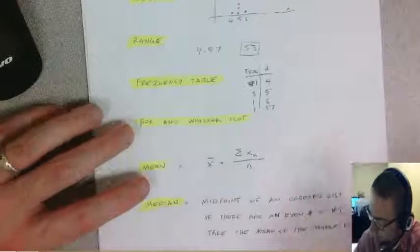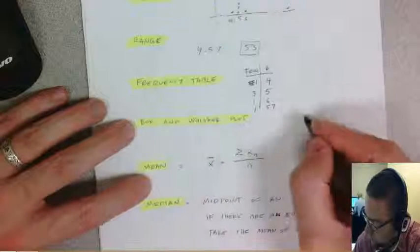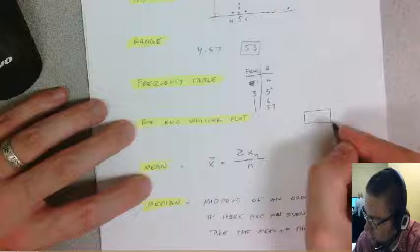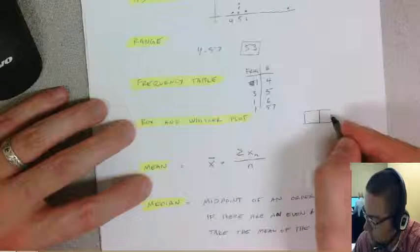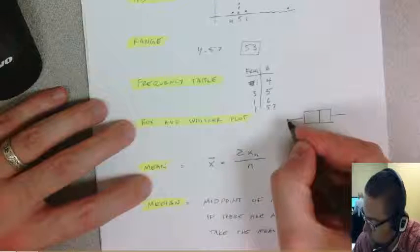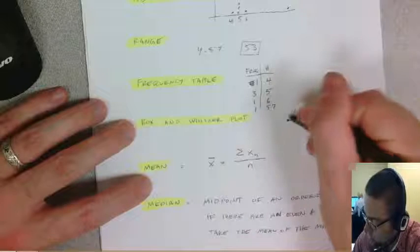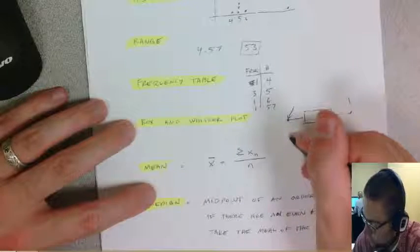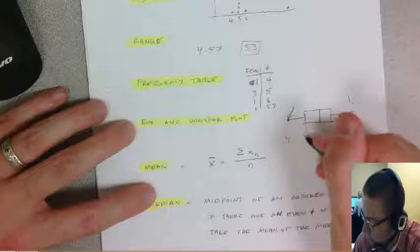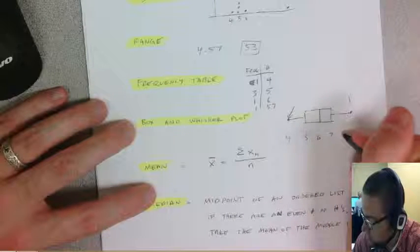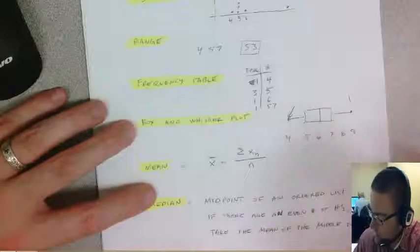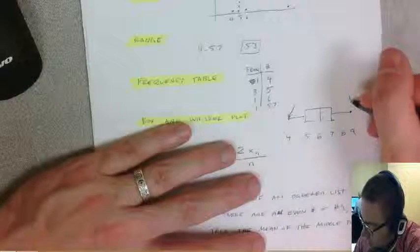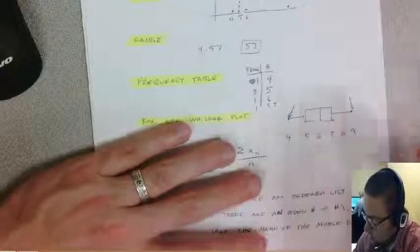A box and whisker plot, we'll get into more detail a little bit later. But you have a box and there are five main points. This shows you the bottom of the range, this shows you the top of the range. And it would be listed like 4, 5, 6, 7, 8, 9. So if you had some list, you can make a graph out of this. This would be the low, this would be the high.